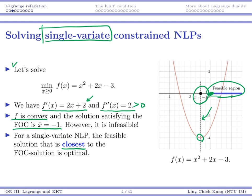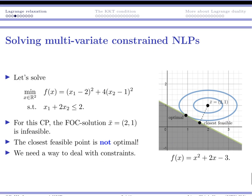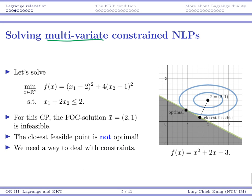Suppose we have a multivariate problem. For example, this one. I now want to minimize f of x, which is x1 minus 2 squared, plus 4 times x2 minus 1 squared. And in this case, it would be not too difficult to see that if there is no constraint, then for this problem, the optimal solution is for x1 to be 2 and x2 to be 1. Graphically, it will be here. x1 is 2, x2 is 1.